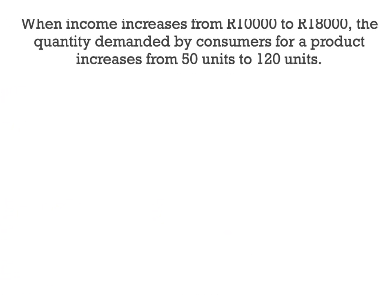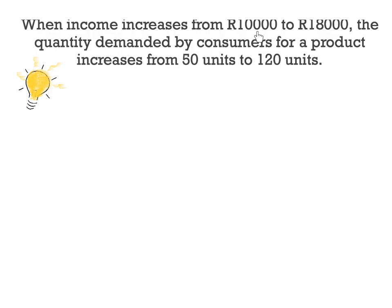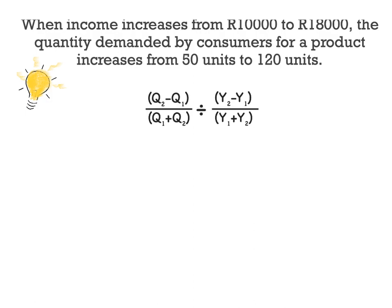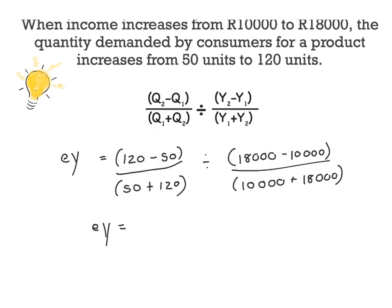Now let's look at our second example. When income increases from 10,000 to 18,000, the quantity demanded by the consumer increases from 50 units to 120 units. Using the arc method and substituting the correct values, EY is equal to 120 minus 50 divided by 50 plus 120, divided by 18,000 minus 10,000 divided by 10,000 plus 18,000 — where the first part represents quantity and the second part income. The final value is EY equal to 1.44.